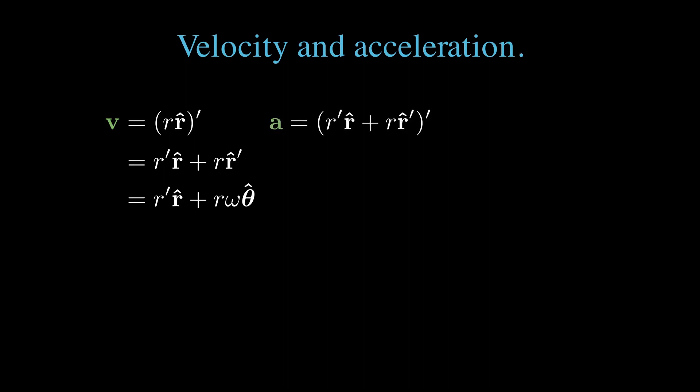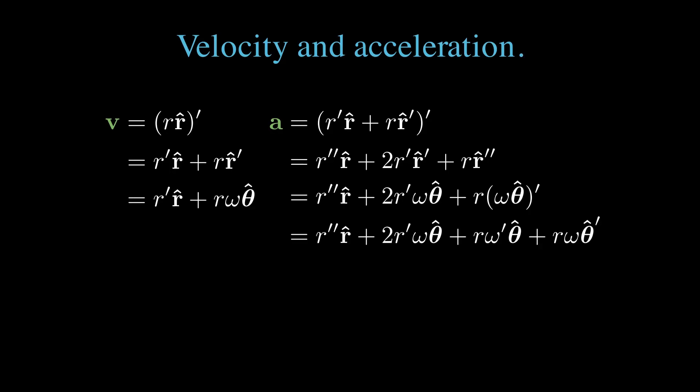Now let's calculate the acceleration. We step back to velocity in terms of r prime and r hat prime. When we expand that, we'll get a nice binomial distribution of all the second derivative terms. We then start expanding out our r hat prime and theta hat prime derivatives until we have no r hat prime or theta hat prime derivatives left.